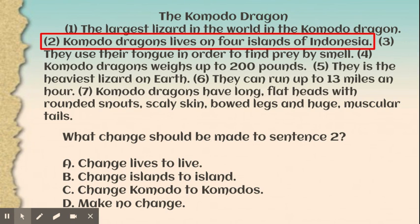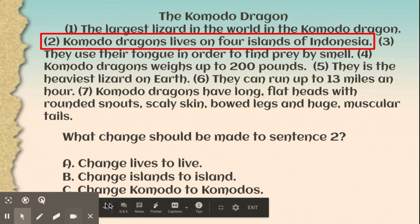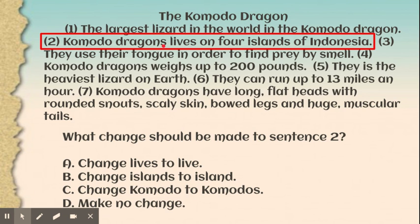You should have picked a) change 'lives' to 'live.' The sentence 'Komodo dragons lives on four islands of Indonesia' is not correct. The subject is 'Komodo dragons' — it is a plural subject because it has the -s, meaning more than one. So the verb has to be plural as well: it should just be 'live,' without the -s. The correct sentence is 'Komodo dragons live on four islands of Indonesia.'